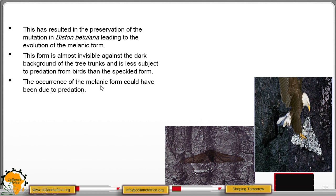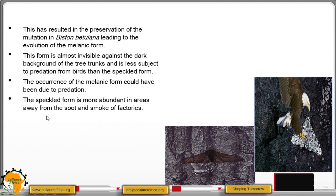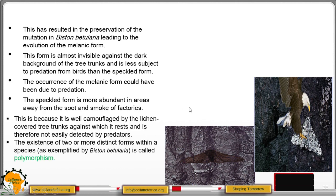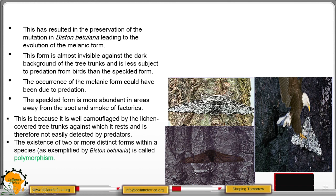The occurrence of the melanic form could have been due to predation. The speckled form is more abundant in areas away from soot and smoke of factories because it is well protected by the lichen-covered tree trunks against which it rests, and is therefore not easily detected by predators. So the speckled form is protected against predation.